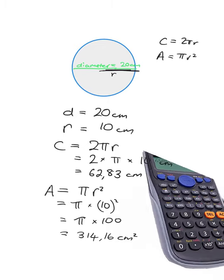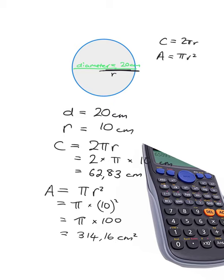If you don't have a scientific calculator, you won't have a button for pi, but that doesn't mean you're stuck. You can use the fact that pi is equal to about 3.14. So you could say your circumference is 2 × 3.14 × the radius and get your answer. If you do have a scientific calculator, rather use the pi button because you get a slightly more accurate answer.